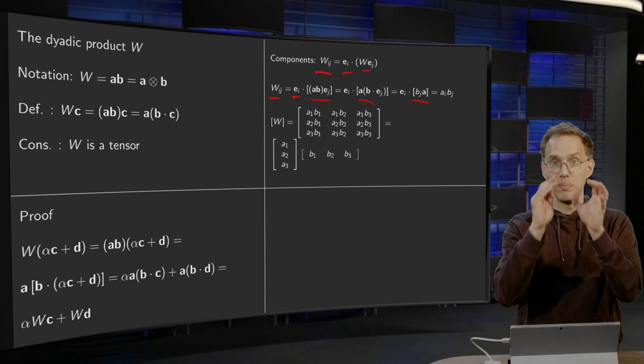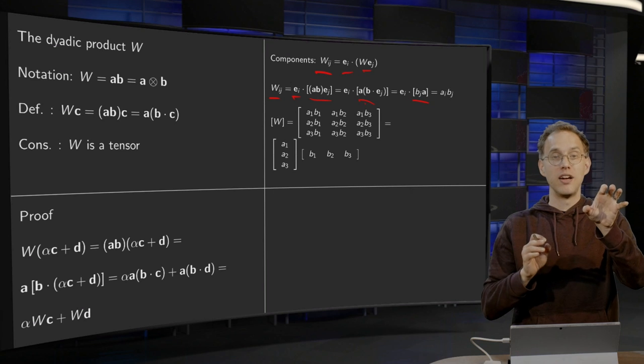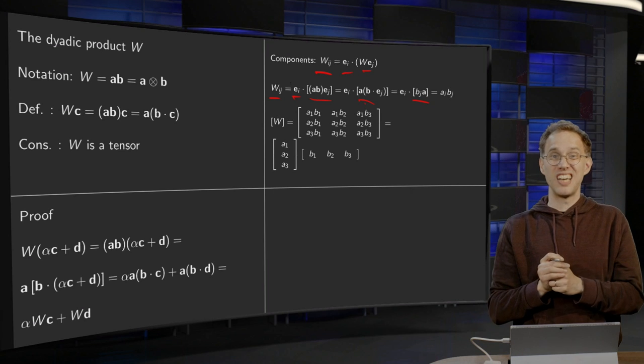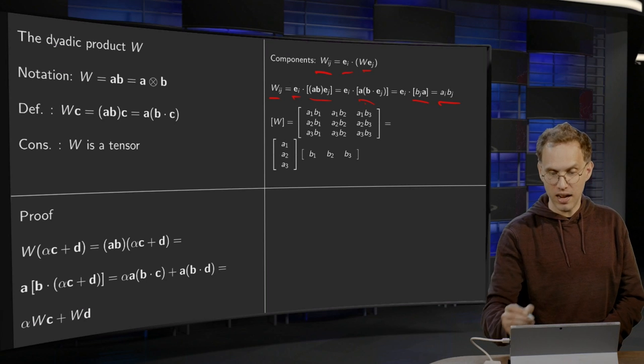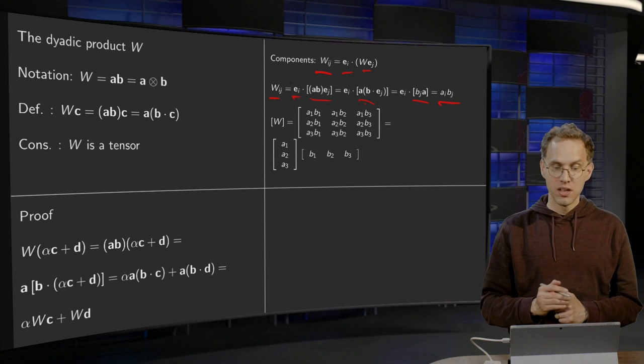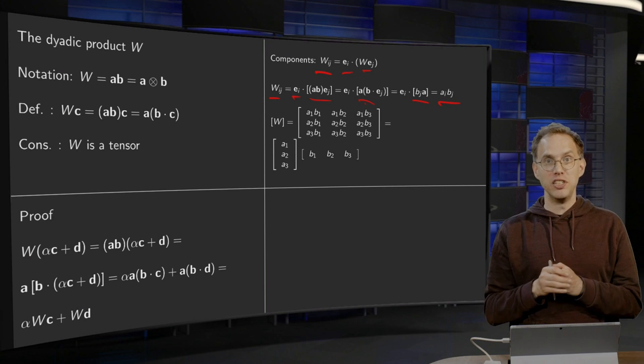So, you're left with the number BJ times vector A. And if you now take the inner product of EI with this vector, you're just selecting the Ith component of A. So, you get the number AI times BJ. So, the matrix of your W contains AIBJ.